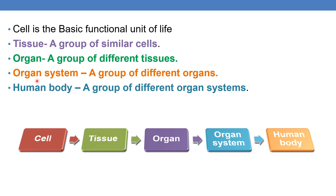For example, the urinary system is an organ system — a group of different organs such as kidneys, urethra, ureters, etc. Finally, the human body is a group of different organ systems. In ascending order: cells form tissues, tissues form organs, organs form organ systems, and organ systems form the human body.